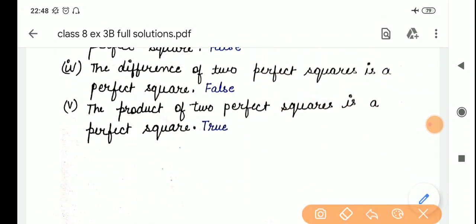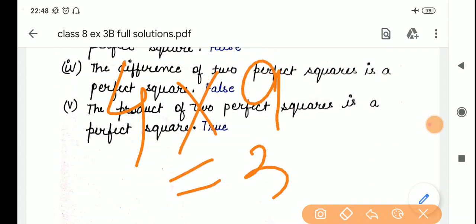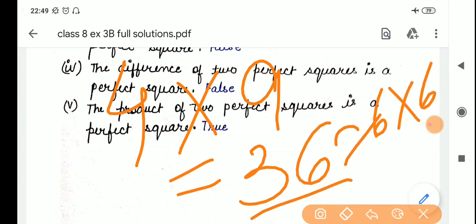The product of 2 perfect squares is a perfect square. So, 4 is a perfect square multiply by 9 is also a perfect square. Answer is 36. Yes, 36 is also a perfect square of 6, 6 into 6. So, it is true.